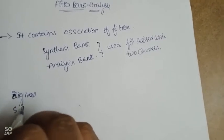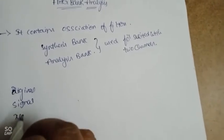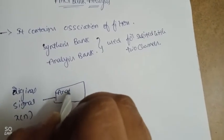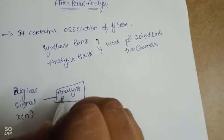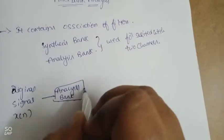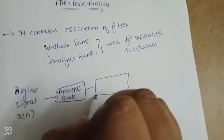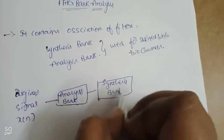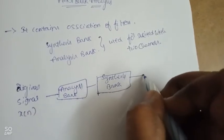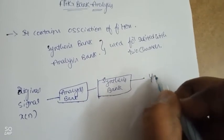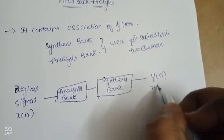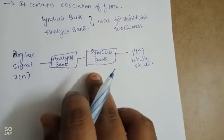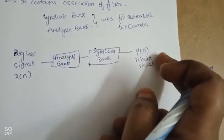The input signal x(n) passes through the analysis bank, and then the synthesis bank. Using these two steps, we rebuild the output signal y(n) from the original signal.